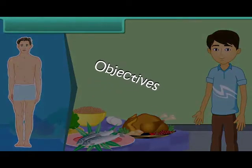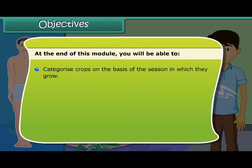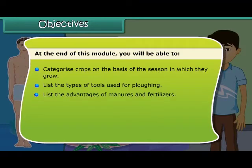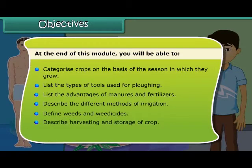At the end of this module, you will be able to: categorize crops on the basis of seasons in which they grow; list the types of tools used for plowing; list the advantages of manure and fertilizers; describe the different methods of irrigation; define weeds and weedy sites; describe harvesting and storage of crop; and explain animal husbandry.